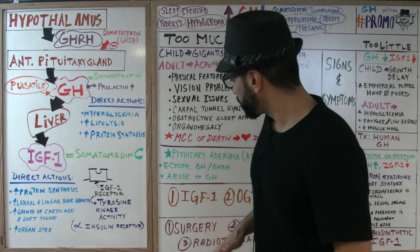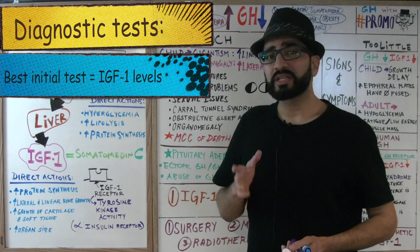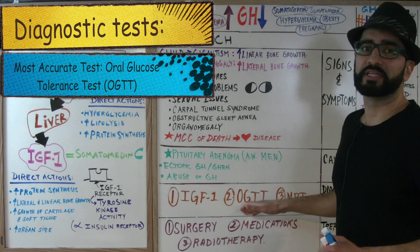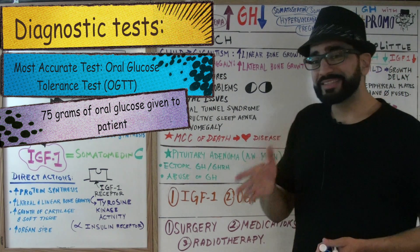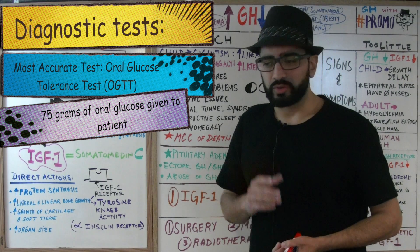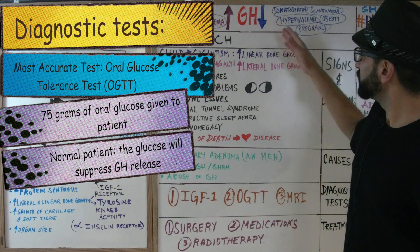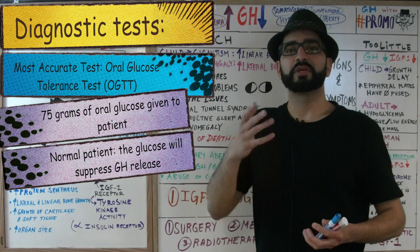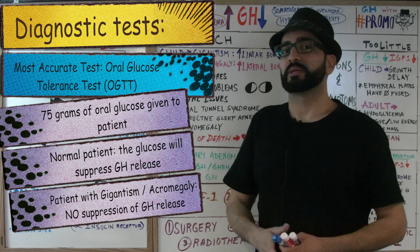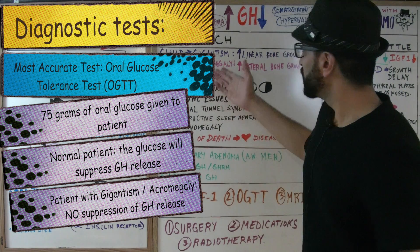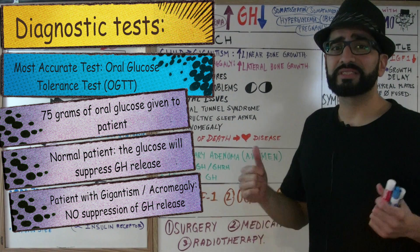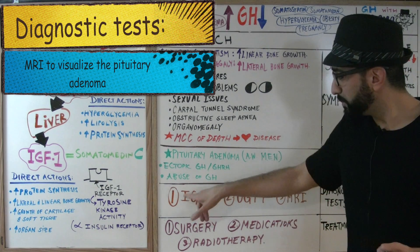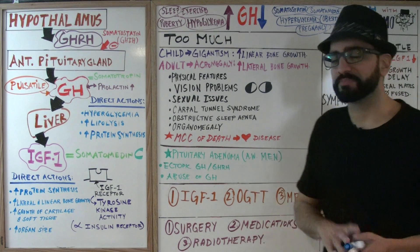In the hospital, the best initial test is measuring IGF-1 levels — they will be elevated. The most accurate test is the oral glucose tolerance test: you give the patient 75 grams of glucose. Normally, hyperglycemia suppresses growth hormone. But in a patient with gigantism or acromegaly, giving glucose does nothing — growth hormone remains elevated. Finally, MRI is done to visualize the pituitary adenoma, but always do the best initial and most accurate tests first.